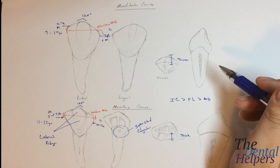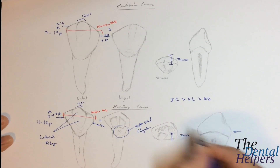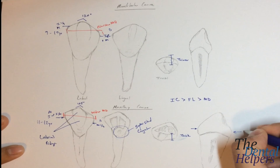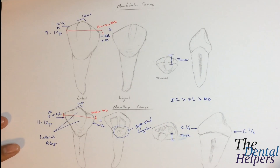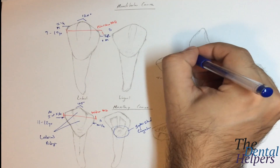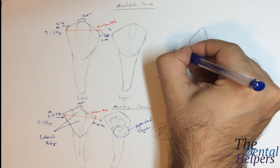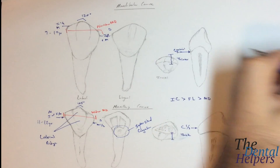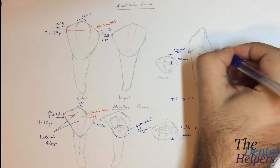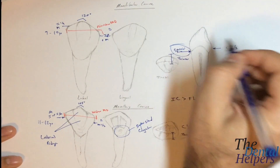The height of contours for the maxillary are going to be at the cervical one-third on both sides, as we've seen with all the other anteriors. The subtle difference is in the mandibular: the facial height of contour is going to be closer to the cervical line, while the lingual is going to be at the cervical one-third. That's the subtle difference you have to consider.